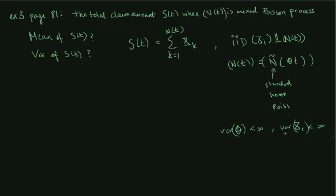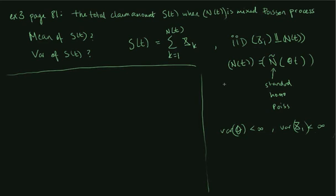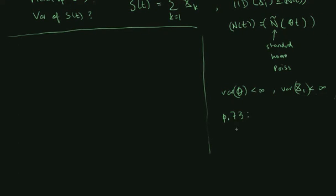We want to find the mean value and the variance. Note that this is new compared to what has been done in the book, because the book finds the mean value and variance of S in the renewal case. The mixed Poisson process is not a renewal process. However, we can reuse some results from the book — in particular from page 73 — where we get that the variance of S(t) given N is equal to N multiplied by the variance of X1.